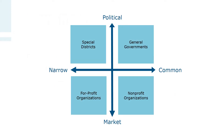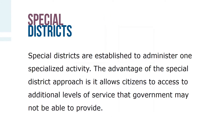Four types of institutions result from this comparison: special districts, general governments, for-profit organizations, and nonprofit organizations. Special districts offer an alternative way of providing public services. Special districts are established to administer one specialized activity. The advantage of the special district approach is that it allows citizens to access additional levels of service that government may not be able to provide.